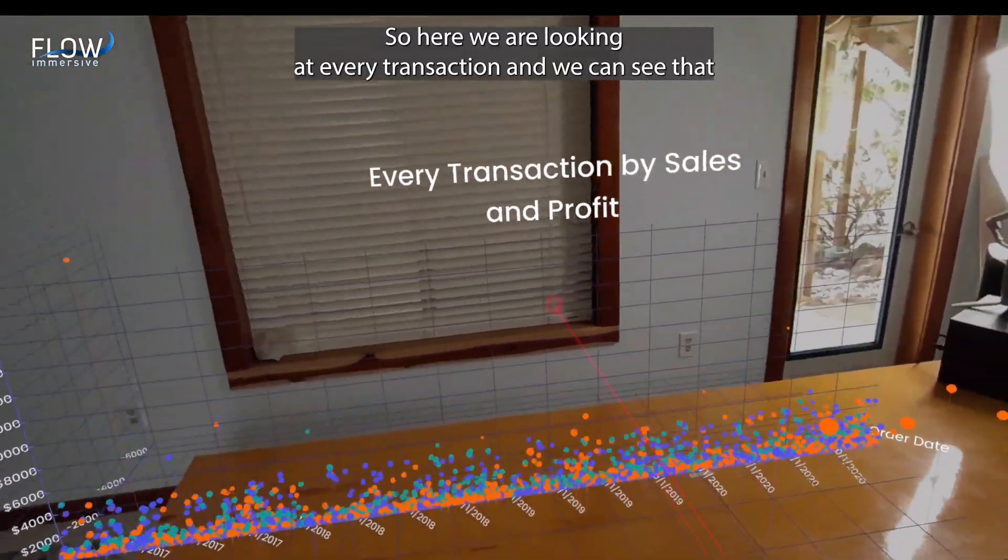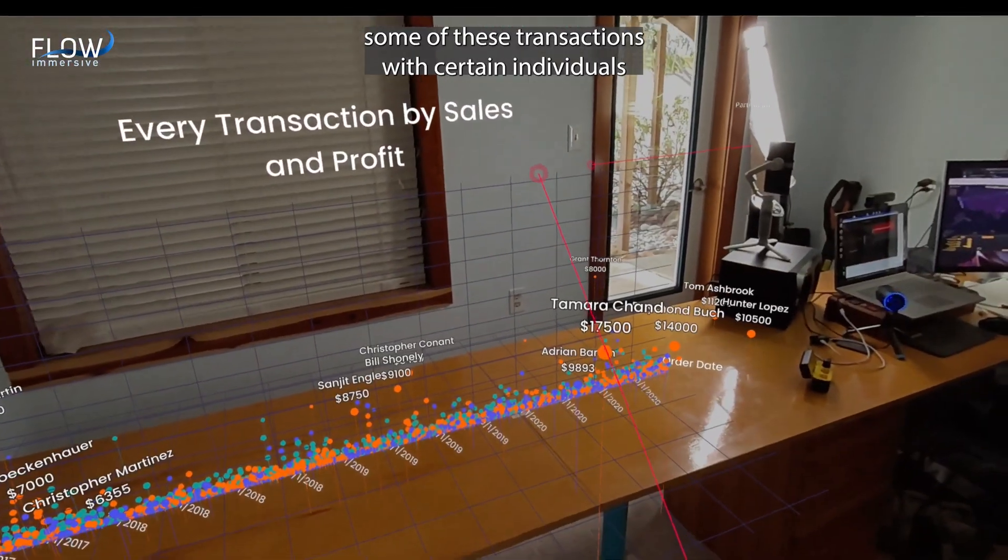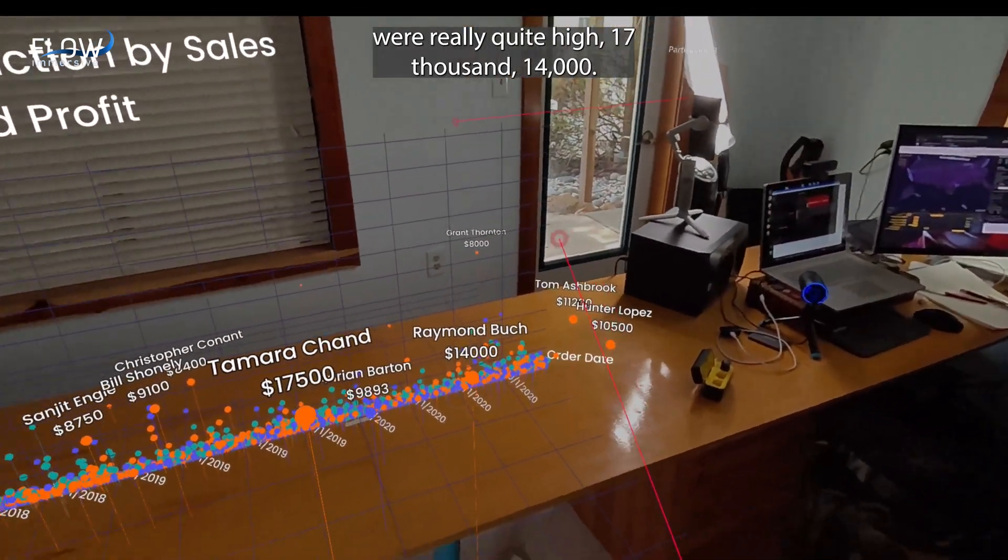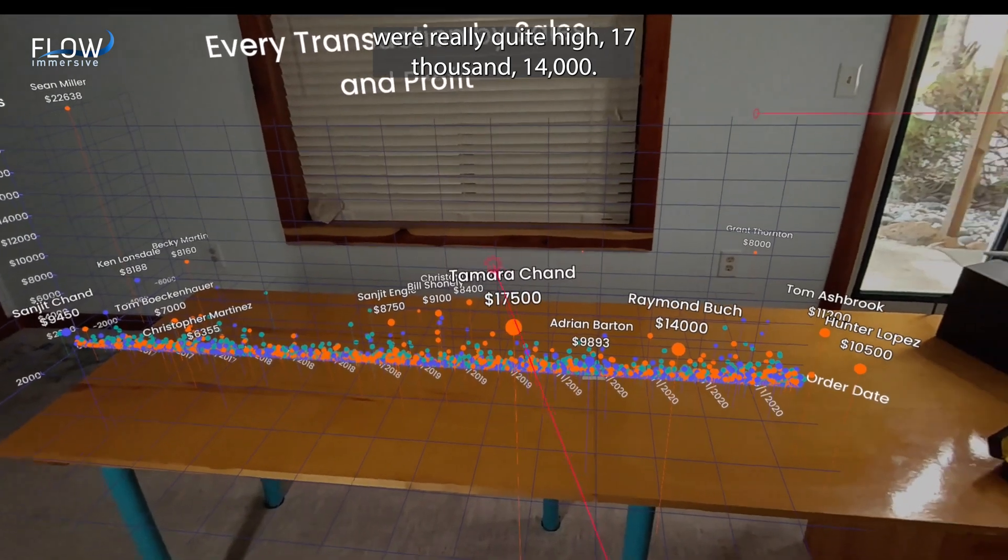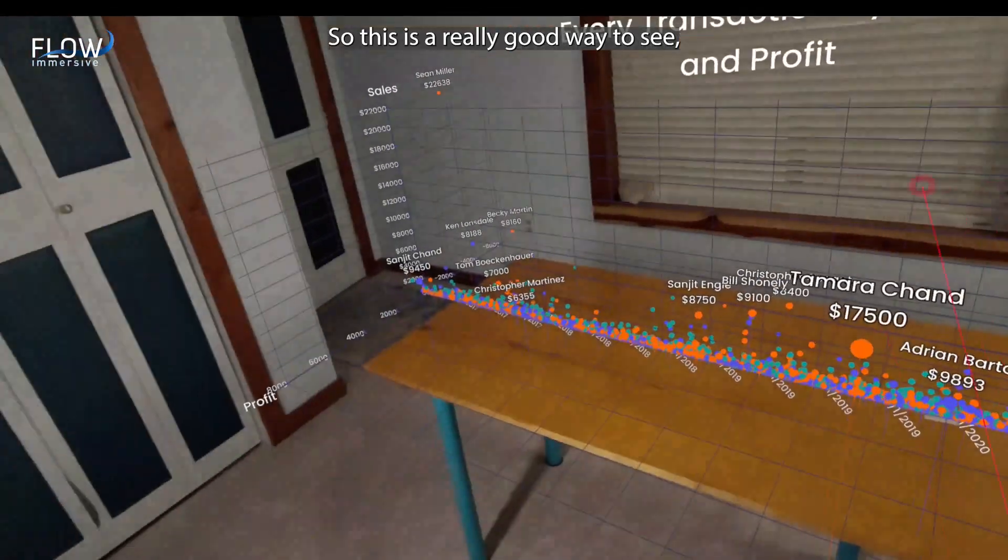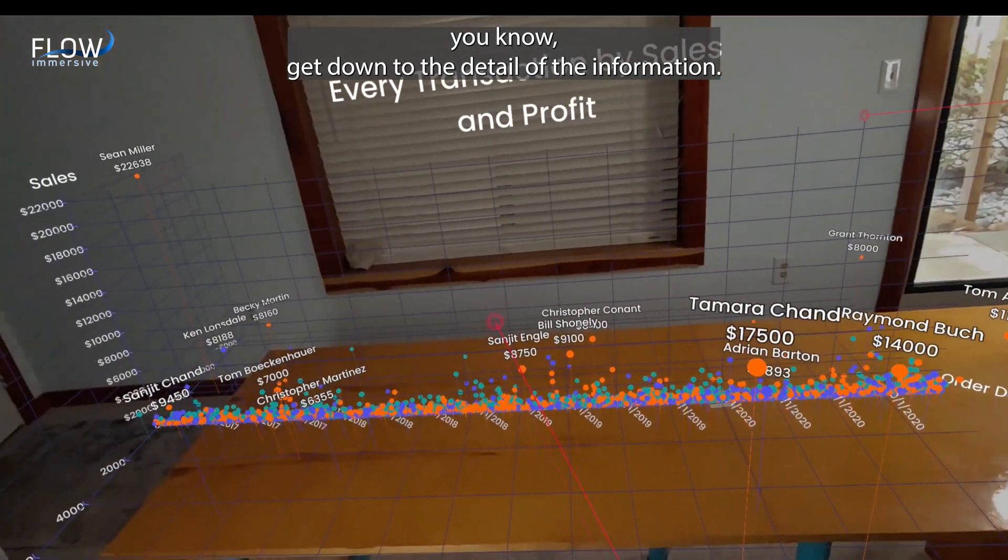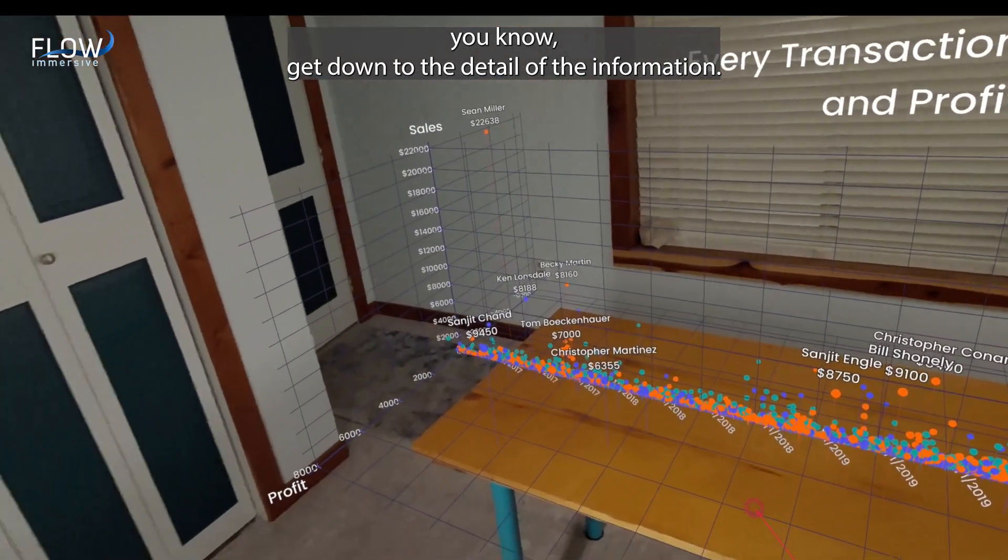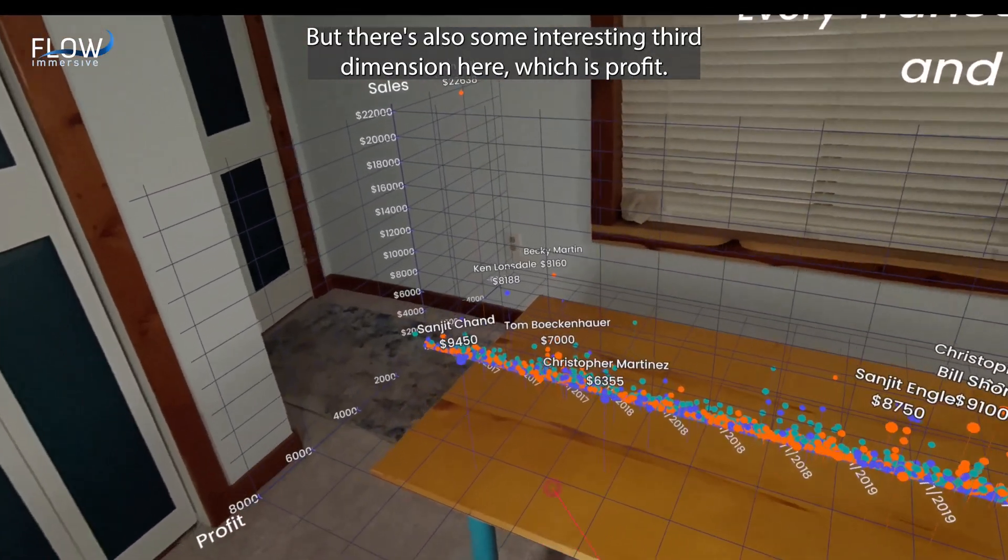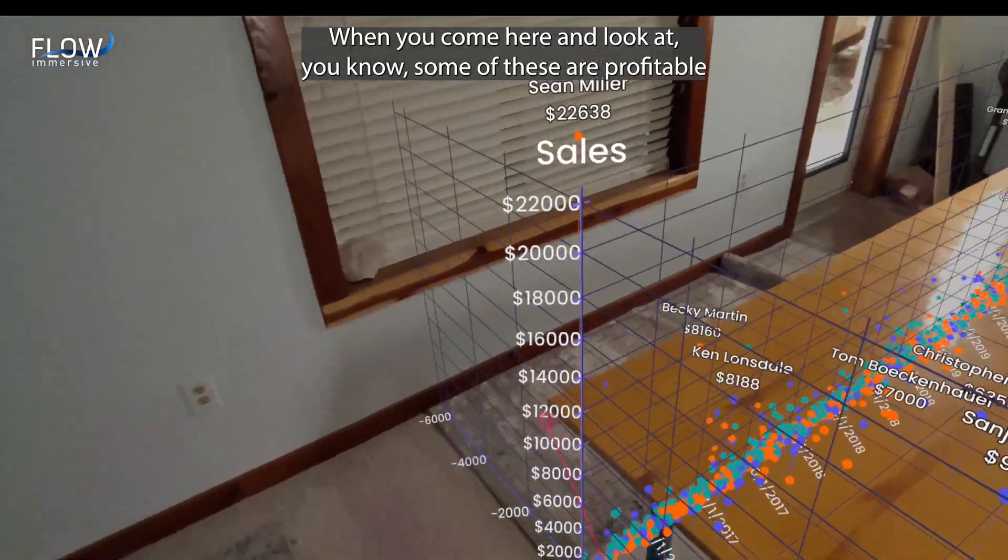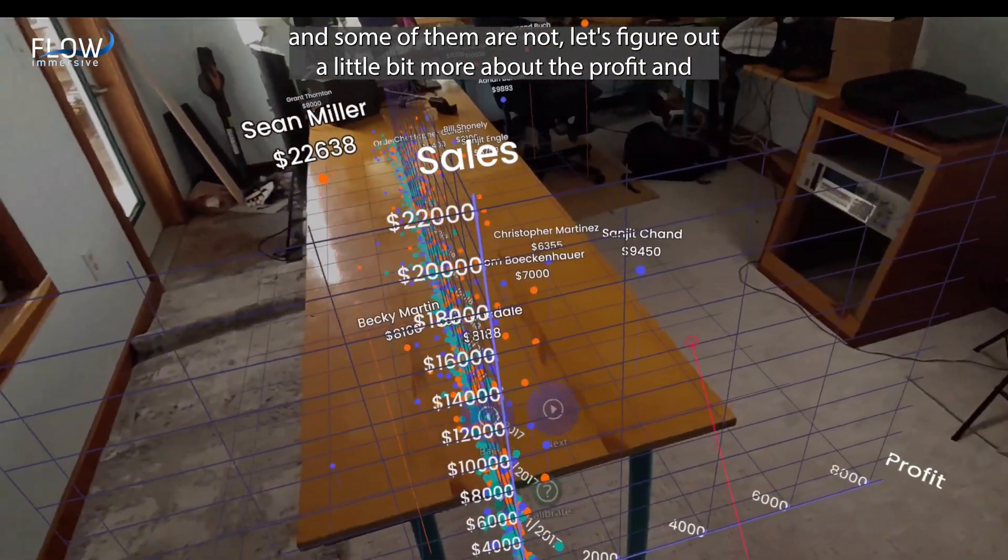So here we are looking at every transaction and we can see that some of these transactions with certain individuals were really quite high, 17,000, 14,000. So this is a really good way to get down to the detail of the information, but there's also some interesting third dimension here, which is profit. We come here and look at some of these are profitable and some of them are not.